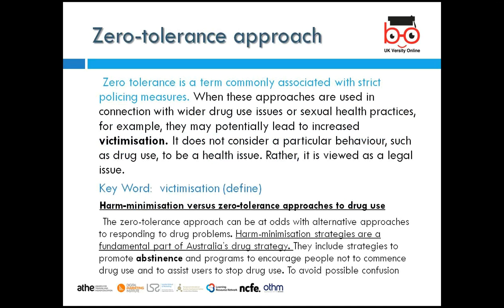The zero tolerance approach involves strict policing measures. When used in connection with drug use or sexual health practices, it may potentially lead to increased victimization. It does not consider drug use as a health issue; rather, it is viewed as a legal issue. For example, in Amsterdam, prostitution is legalized and regulated, but in other parts of the world a zero tolerance approach means it is not permitted.